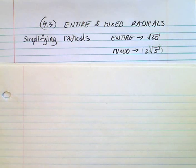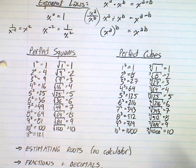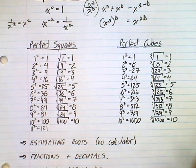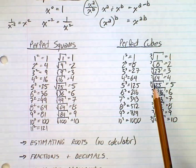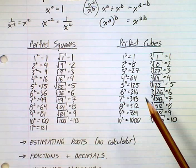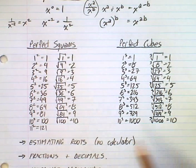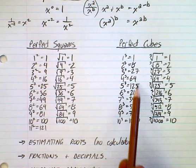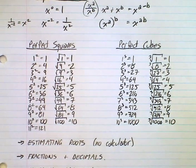A couple of things we need to know first: you need to know your perfect squares and your perfect cubes. If you haven't written this down yet, you should have that in front of you — maybe even some perfect powers of 4. You should be able to do 1 squared, 2 squared, 3 squared all the way up to 10 squared; for cubes, use your calculator.